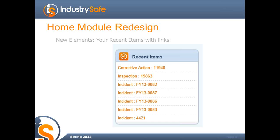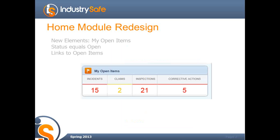You'll always be able to see what records you looked at previously, and this is actually a hyperlink so you can click on it and it'll take you back to the record. You'll also see in the Home Module a status of open items. To appear as the status of an open item, the status of the record has to equal open — a corrective action, inspection, claim, or incident with an open status. There's color coding: no open items shows green, a couple will be yellow, and a lot of open items will show up as red. These are particular to you as the end user. I can click on this number and it will take me to my open items.